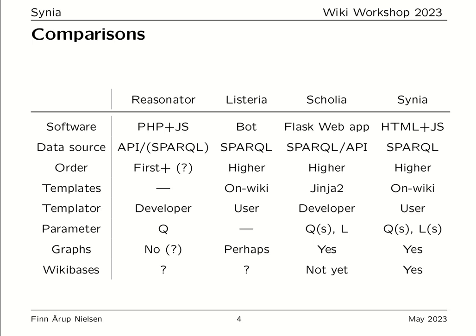As for displaying information from other Wikibases: in Scolia, we cannot yet do that. In Cynia, yes — with a few slight changes in configuration, we can let Cynia display information from other Wikibases and their query services.